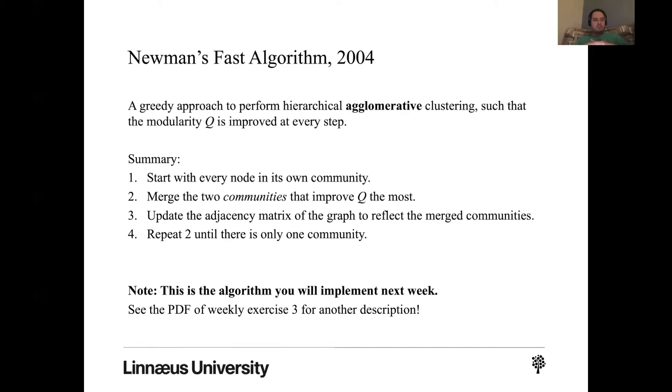So basically, the idea is incredibly simple. Every node starts as being its own community. So we don't talk about nodes anymore. We talk about communities, even though in the beginning, they only have one node each. Then we merge the two communities that improve Q the most.